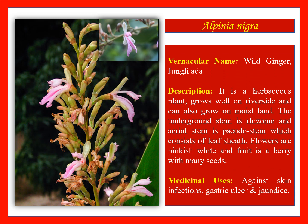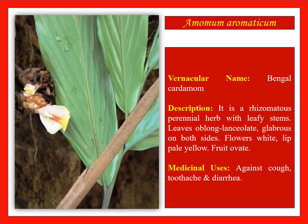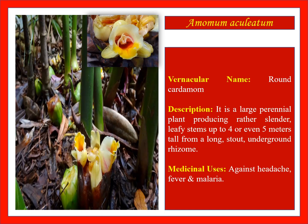Alpinia nigra, wild ginger or jungly adha — against skin infection, gastric ulcer, and jaundice. Alpinia purpurata — against stomach ache and diarrhoea. Amomum aromaticum — against cough, toothache, and diarrhoea. Amomum aculeatum — against headache, fever, and malaria.